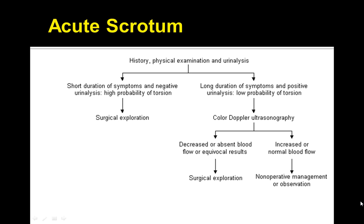If there's a longer duration of symptoms and a positive urinalysis, then there's probably a lower probability of torsion, and the next step should be to get a color Doppler ultrasonography. After that, you want to determine if there's increased or normal blood flow, or if there's decreased or absent blood flow. If there is increased or normal blood flow, then you're looking at non-operative management or plain observation.